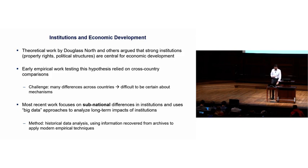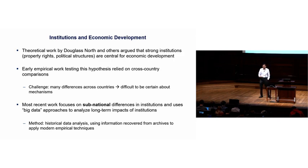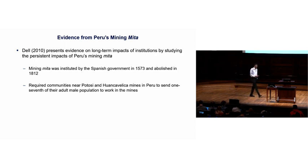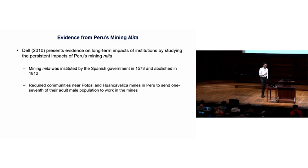The most recent work takes a big data approach and focuses on sub-national differences in institutions in a very precise way to analyze their long-term impacts. The method I'm going to focus on is historical data analysis — showing how economic historians go back in time to recover information about the past and apply modern empirical techniques to tackle the causal effects of institutions.